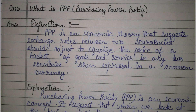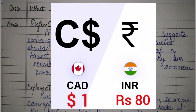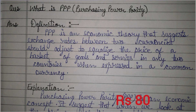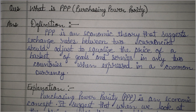इसका मतलब है कि अगर हमारे पास दो देशों की currency की value है — जैसे कि Canada में 1 डॉलर और India में 80 रुपए — तो हम Purchasing Power Parity का use करके समझ सकते हैं कि कितने पैसे एक देश में दूसरे देश के पैसे के equal होते हैं।